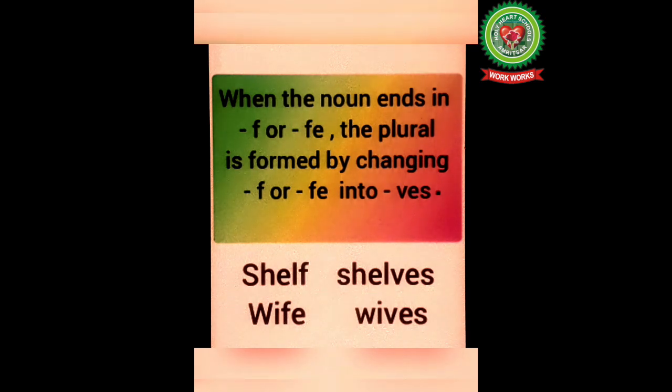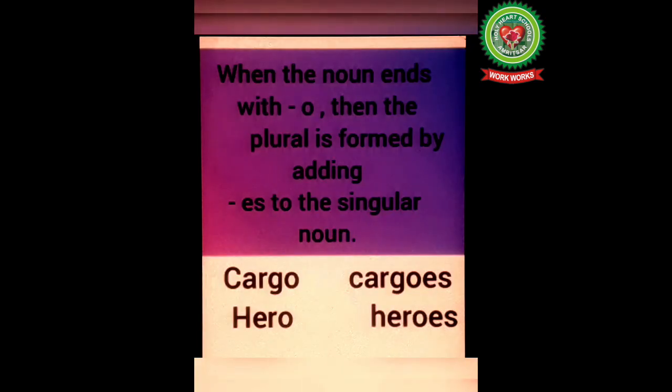For example, shelf becomes shelves, wife becomes wives. Next rule is when the noun ends with O, then the plural is formed by adding ES to the singular noun. For example, cargo becomes cargoes, hero becomes heroes.